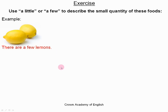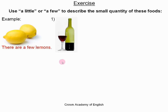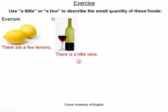Question one — the answer is 'there is a little wine,' because wine is a liquid and liquids are often uncountable. So wine stays in the singular, we use 'a little,' and the verb is in the singular.